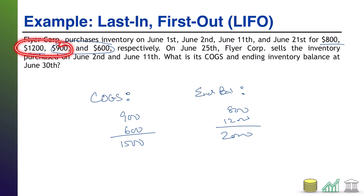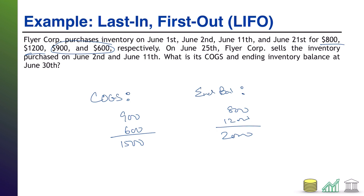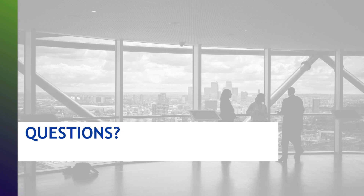We then assume that if customers bought those two, we must still have the $800 and the $1,200 sitting in ending inventory, for a total of $2,000. Notice this is not fully accurate — we know we really sold the $1,200 and the $900, so COGS should be $2,100, and what we really have left is the $800 and the $600 for an ending balance of $1,400. These inaccuracies, while not desirable, are considered an acceptable trade-off to allow for practical applicability. That's it for last in first out — hope you found this helpful!